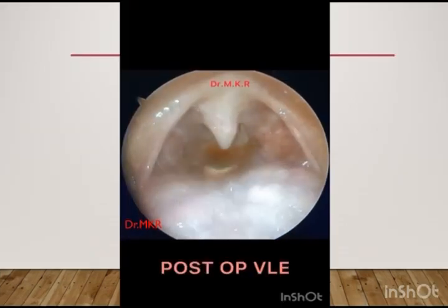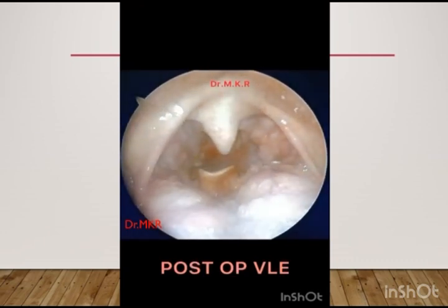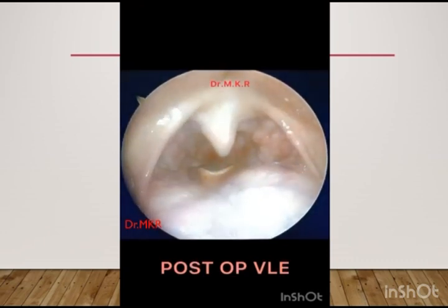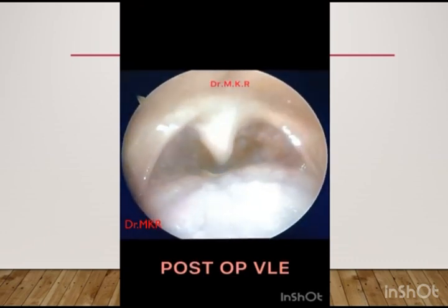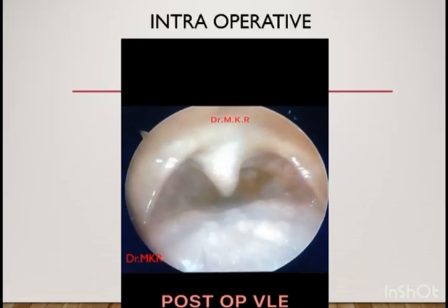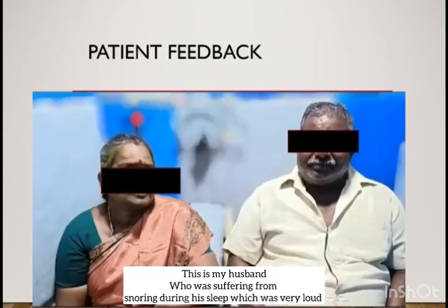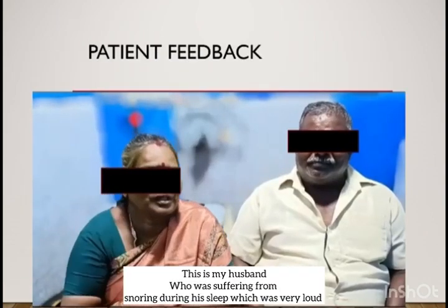This is the post-operative video laryngoscopy. You can see the uvula and the posterior one-third of the tongue clearly. Mallampati 4 has become Mallampati 1. This is the pre-operative AHI, and this is the post-operative AHI — now it is within normal range.